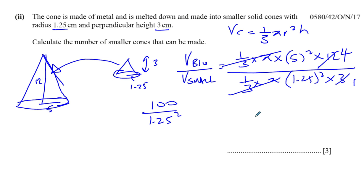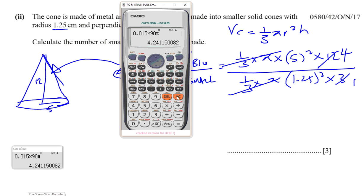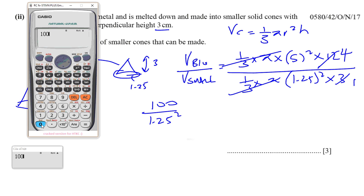If you calculate that, 100 divided by 1.25 squared, let's see what happens. 100 divided by 1.25 squared will give us an answer. Divided by, sorry about that, silly me. I knew there was something funny about that. That gives you 64.